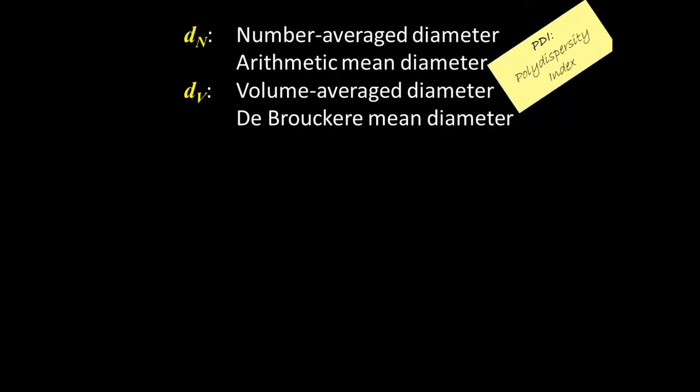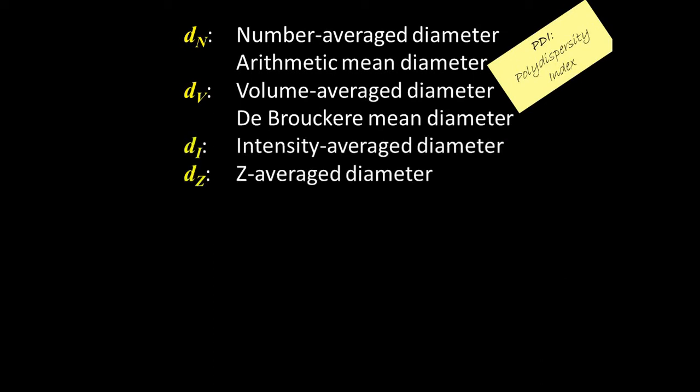So there you go, dn, dv, and PDI. Those numbers should tell you all you need to know about the size of your particle… dang it. Alright, let's cover these other two.